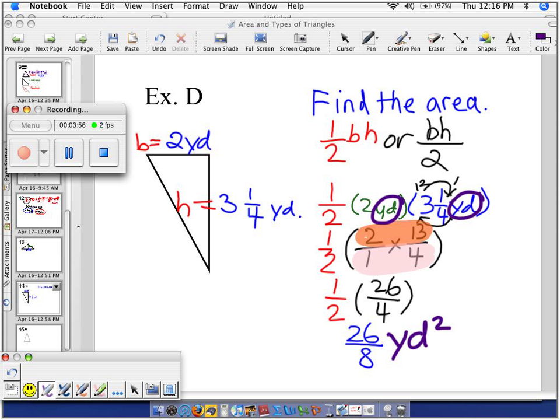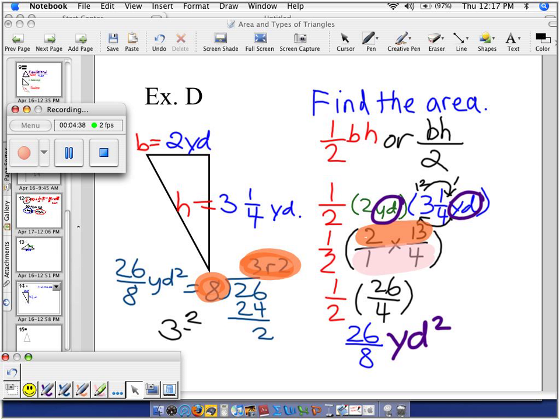So I'm going to change that improper fraction by division. The bottom number goes out, the top number goes in. Eight times three is 24, I get a remainder of two. And then I've got to use this information to create a mixed number. So this tells me I have three wholes, I have two remaining out of eight.